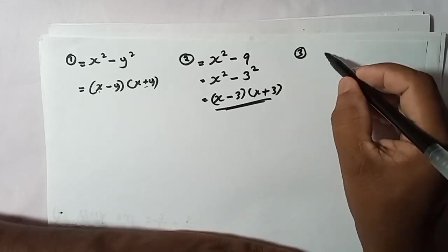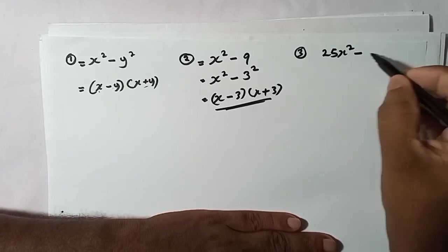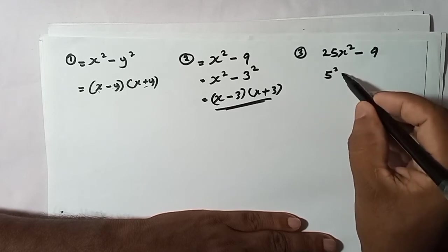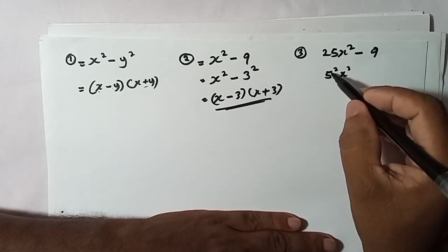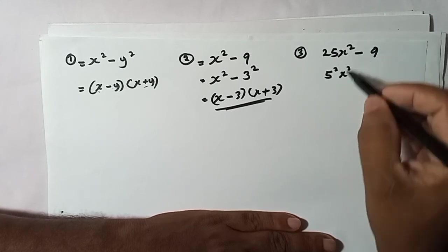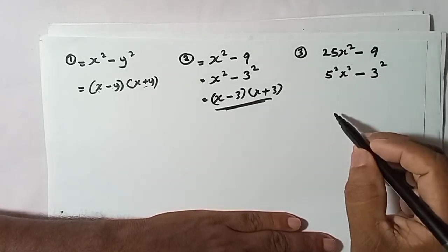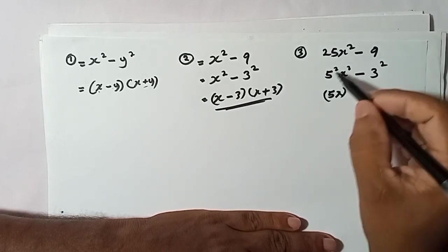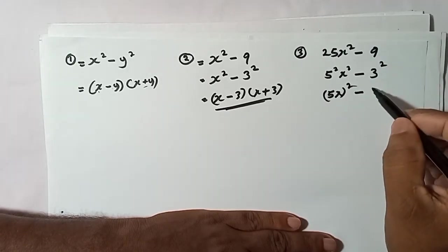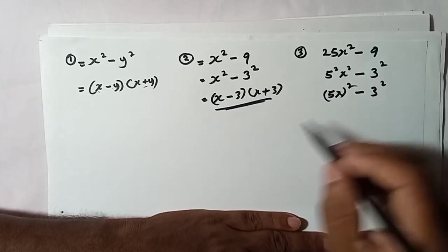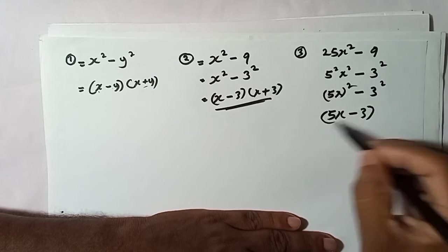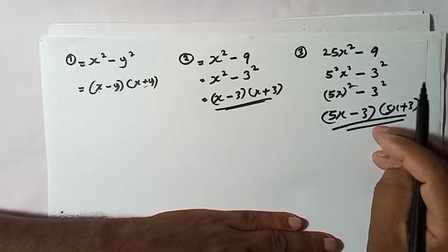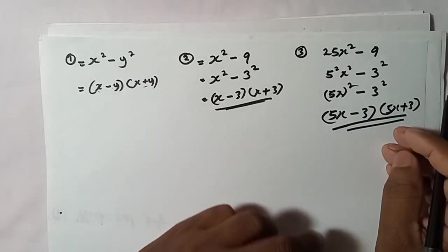Next, let's factorize 25x squared minus 9. I need to write both terms as squares. 25 can be written as 5 squared, and x is already squared, so 25x squared is 5x squared. And 9 is 3 squared. Now it is 5x squared minus 3 squared, so you can write the answer as 5x minus 3 times 5x plus 3. Very simple. Now I'll move on to some IGCSE exam questions.